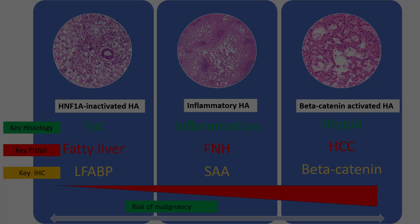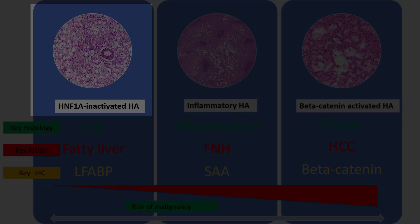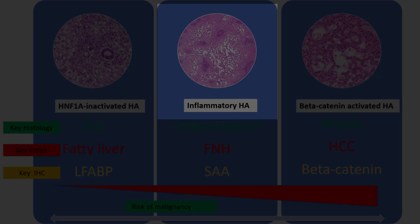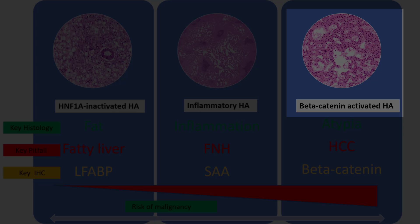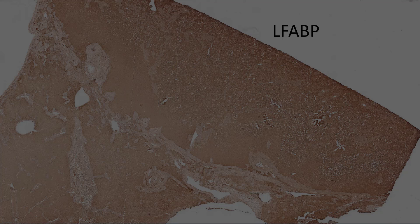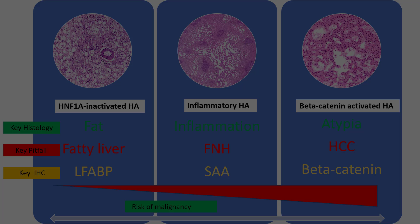So first things first: classification of hepatic adenomas. There are broadly three types. The HNF1-alpha-inactivated adenomas, which I prefer calling fatty adenomas because they show fat; the inflammatory adenoma; and the beta-catenin-activated adenoma. Now this lesion did have a bit of fat, and hence I considered a fatty adenoma. The key immunohistochemical stain is LFABP, and as you can see here, the LFABP is intact — that essentially rules out a fatty adenoma.